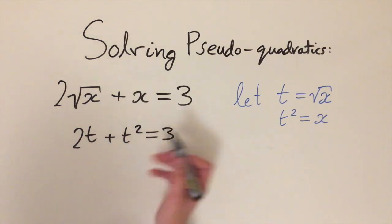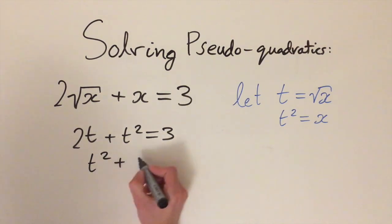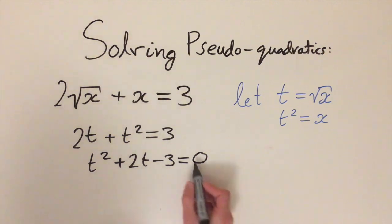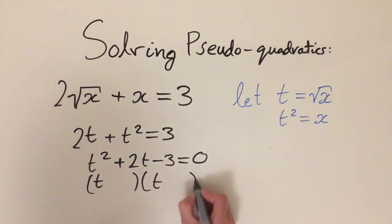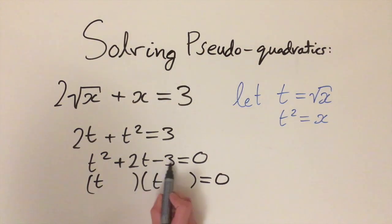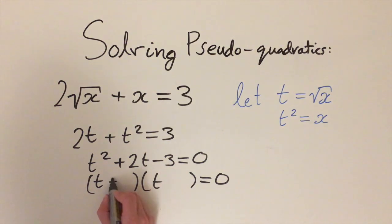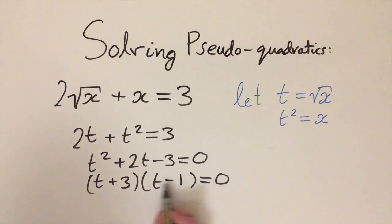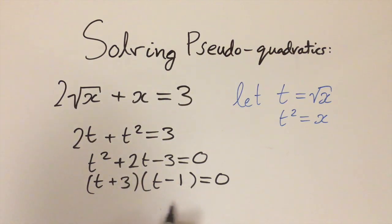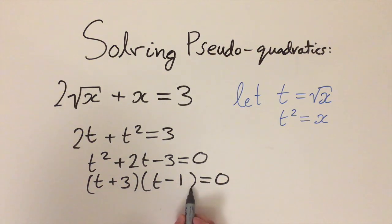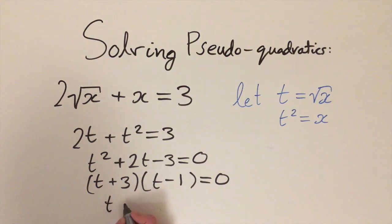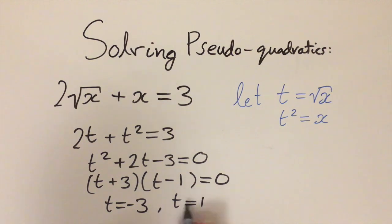So we have 2t plus t squared equals 3. Rearranging gives t squared plus 2t minus 3 equals 0, which is a nice quadratic equation we can factorize directly. We need two numbers that multiply to give minus 3 and add to give plus 2, which are plus 3 and minus 1. So the factored form is (t + 3)(t − 1) = 0.